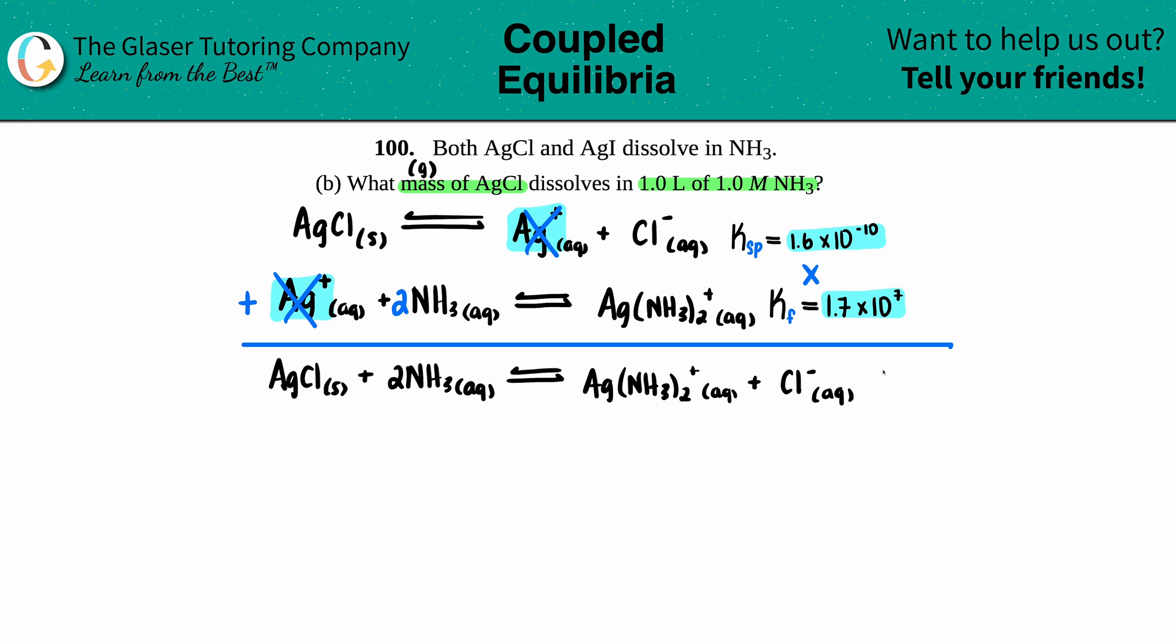I'm going to take 1.6 times 10 to the negative 10th and multiply it by 1.7 times 10 to the seventh to get my new K value for just this equation. So 1.6 times 10 to the negative 10th times 1.7 times 10 to the seventh.